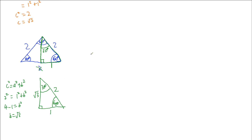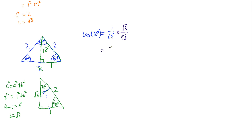Starting with tan of 30 degrees: looking at the 30 degree angle, tan is opposite over adjacent. The opposite side is 1, and the adjacent side is root 3. So I have 1 over root 3. Again, we don't like having the surd on the bottom, so I multiply by root 3 over root 3, giving root 3 on the numerator, over root 3 squared which is 3. So tan of 30 degrees is root 3 over 3.